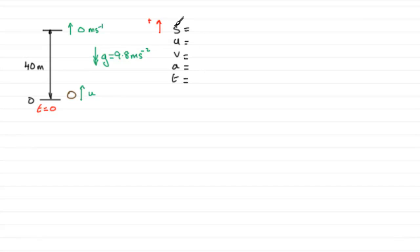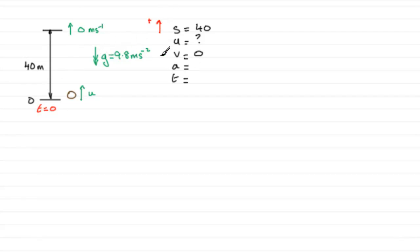So s, the displacement, is 40 meters. u is what we're trying to find. v, the final velocity, we know is 0. The acceleration is in the opposite sense to the positive direction, so it's going to be minus 9.8. And t — we're not worried about t here, so we can forget about that. We're looking for an equation that links these variables together without t.